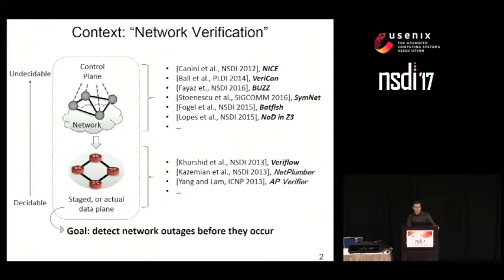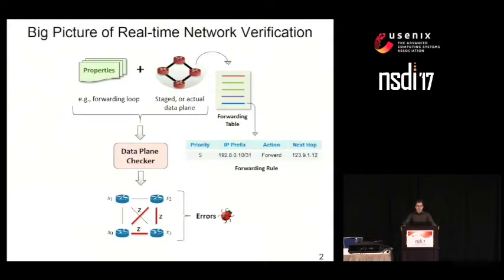What data plane verification exactly means in our context I'll illustrate next. In our case, the big picture of real-time network verification on the data plane looks something as follows. As depicted on the left, the network administrator has given a set of properties that should hold in the network. For example, a standard property to check is the absence of forwarding loops or blackholes.